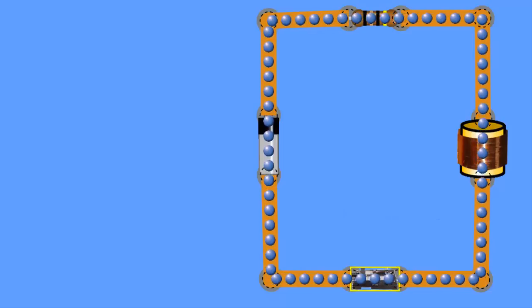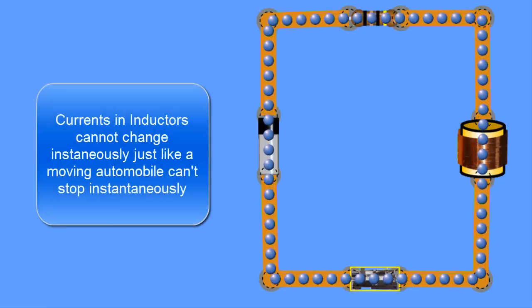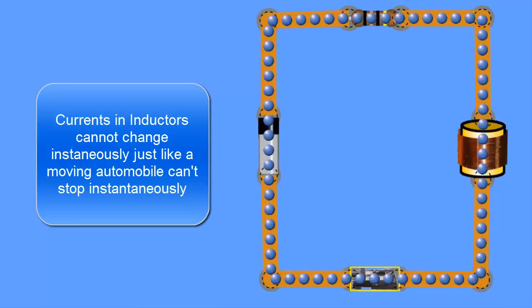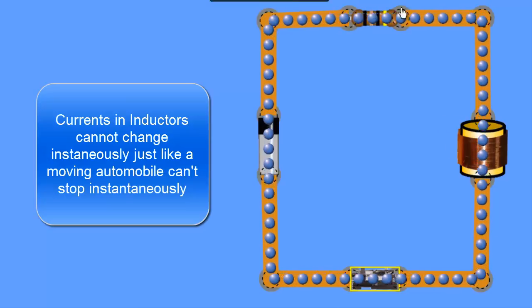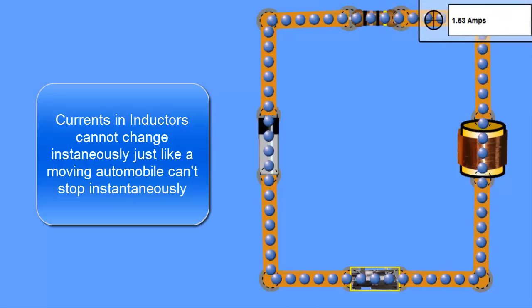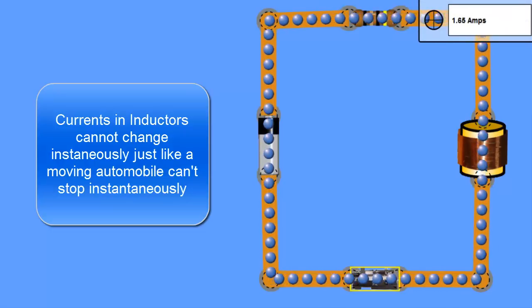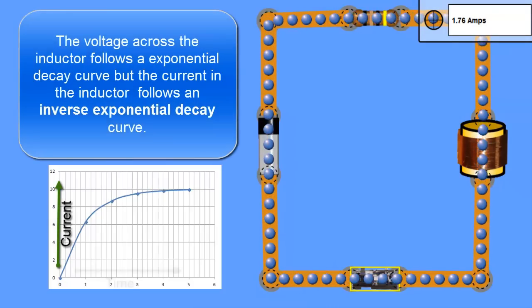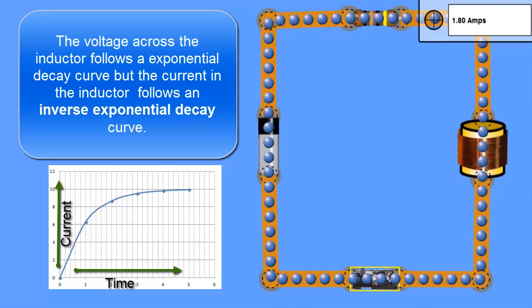And this is really odd isn't it? Because the current did not come on instantly. In fact it looks like it's building up. And let's look at what's happening to the current here. It's at 1.5 amps and climbing. So this is really odd behavior for a circuit.